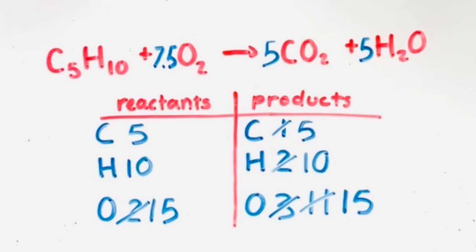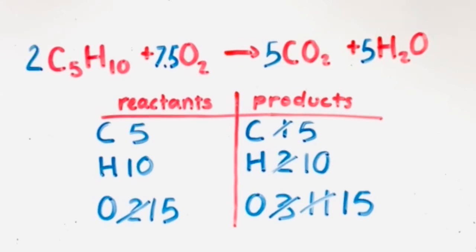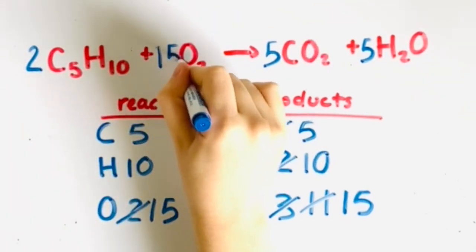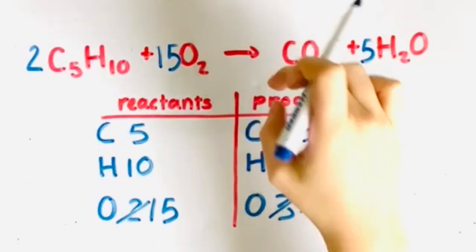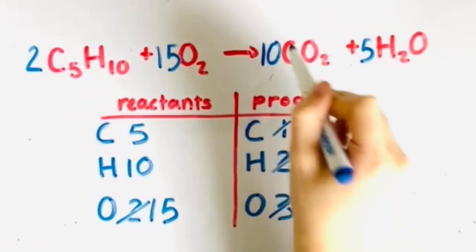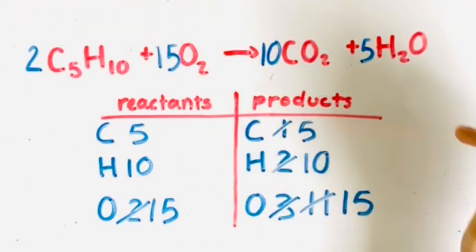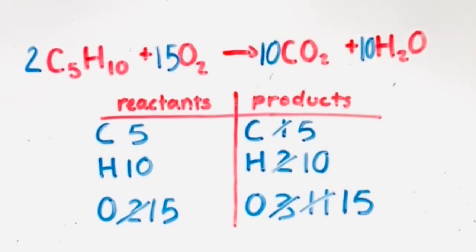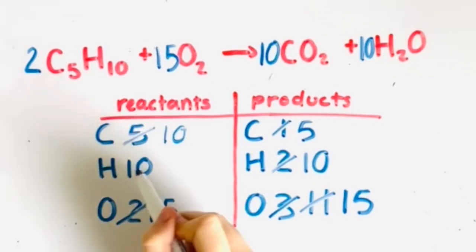The 1 in front of the C5H10 becomes 2, the 7.5 in front of the O2 becomes 15, the 5 in front of the CO2 becomes 10, and the 5 in front of the H2O becomes 10. That gives us our final balanced equation.